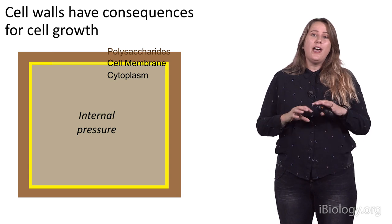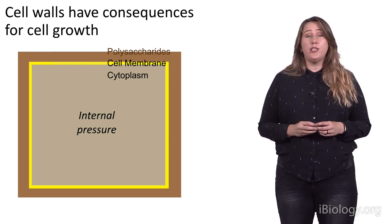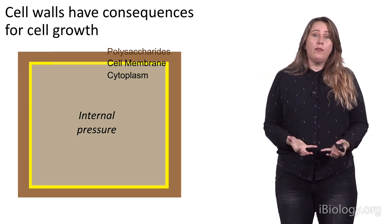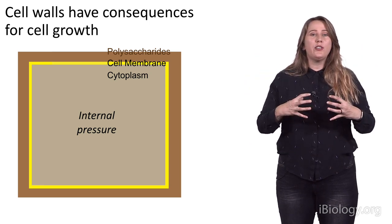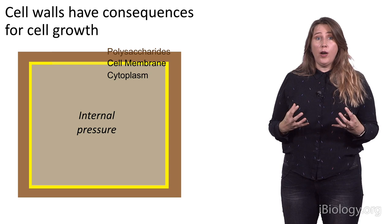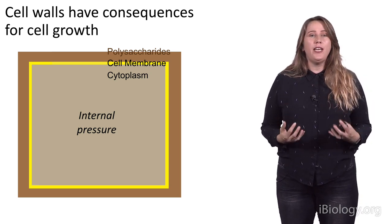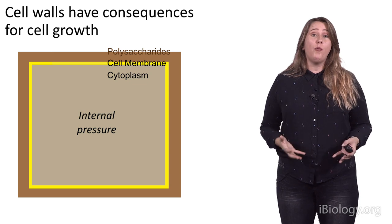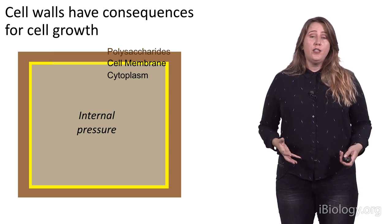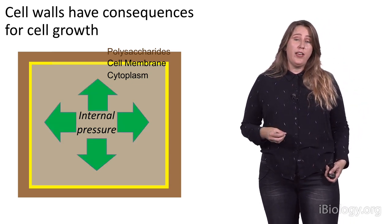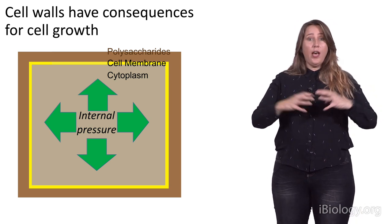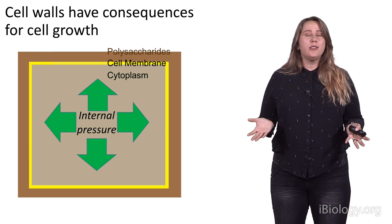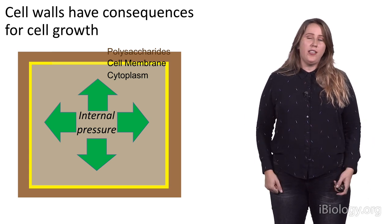So, cell walls have really big consequences for cell growth. In any walled organism, you've got this rigid cell wall around you, this high internal pressure, and so if that cell wants to grow, if it wants to change its shape in any way, it has to do that by modifying that polysaccharide-based cell wall outside of it. So, we can take a very simple example of this and think, let's imagine we have a lot of turgor pressure inside of this cell, but not all the cell walls yield the same way to that turgor pressure.